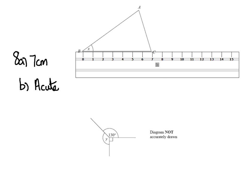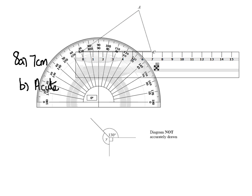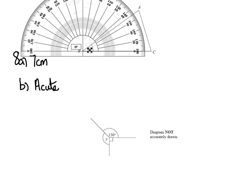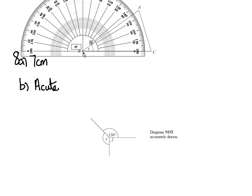We're asked to measure the angle, so I'll remove the ruler and bring the protractor in, making sure the cross is exactly at the point. It's in between 30 and 40, exactly halfway, so it'll be 35 degrees. So part C is 35 degrees.